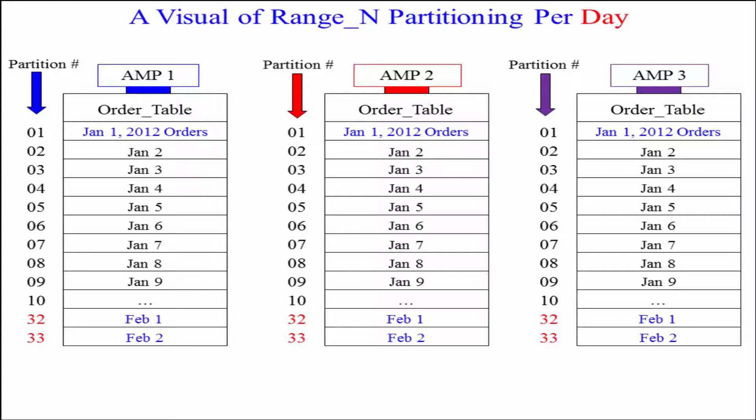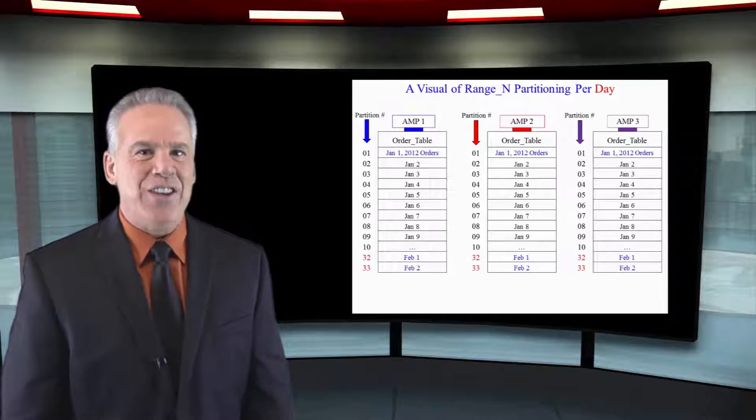Let's take a look at how that's going to lay out. For each year of data, we're going to have 365 partitions on each AMP, unless it's leap year then it's 366. As you can see here, Order_Number was our primary index, hashed everything to the proper AMPs, and now each AMP sorted by the exact day of the year.